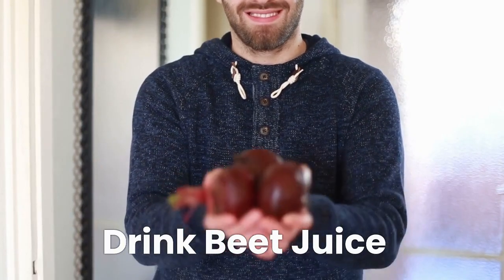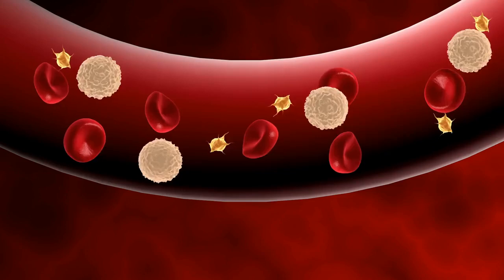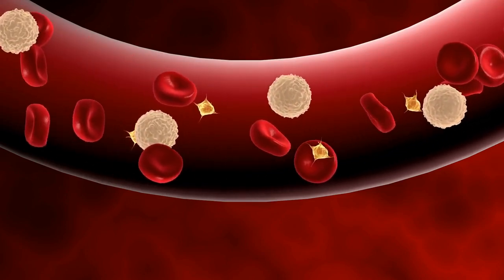One way to stay calmer is to drink beet juice three hours before your appointment. Beets are high in nitrates, which your digestive system converts into nitric oxide. This compound helps relax and widen the blood vessels, which in turn lowers blood pressure.